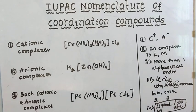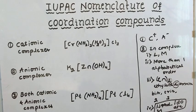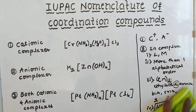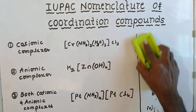In cationic complexes, the metal name remains as it is. The ligand name and metal name follow their respective rules. Now you have to apply these rules to name the coordination compound.